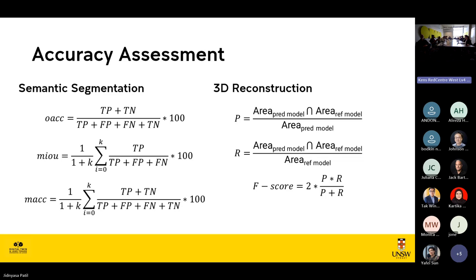The same steps are applied in 3D reconstruction assessment. Precision is the intersection between the predicted model and the reference model with respect to the predicted model. Recall is the same intersection but with respect to the reference model. F-score is a harmonic mean of precision and recall — since precision and recall are a trade-off, we use F-score as one metric to justify how well the model performed.